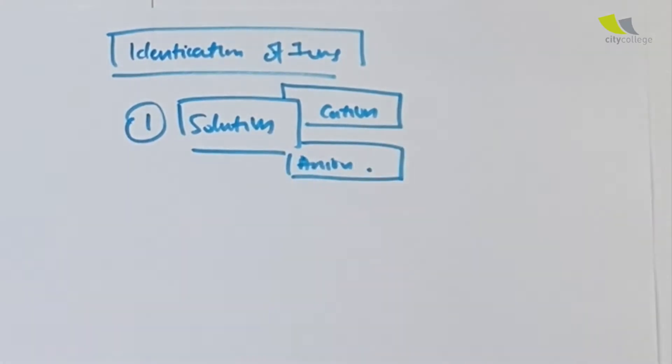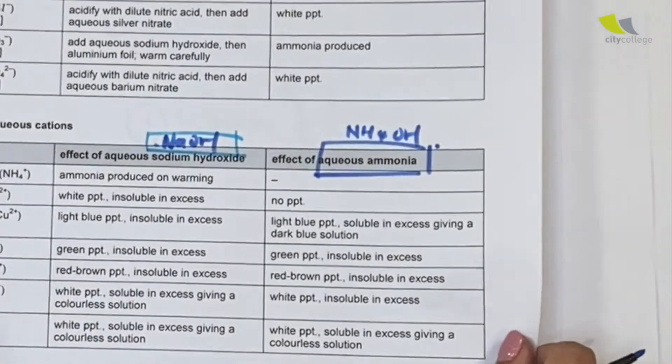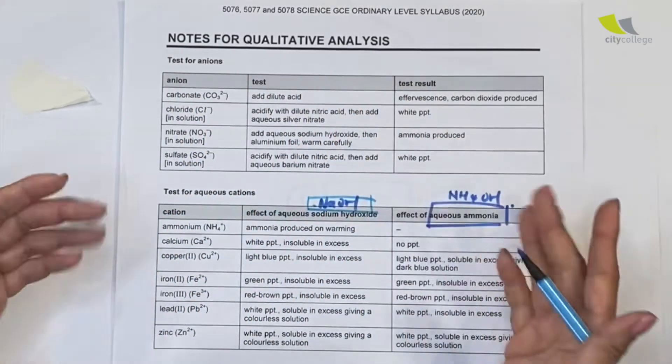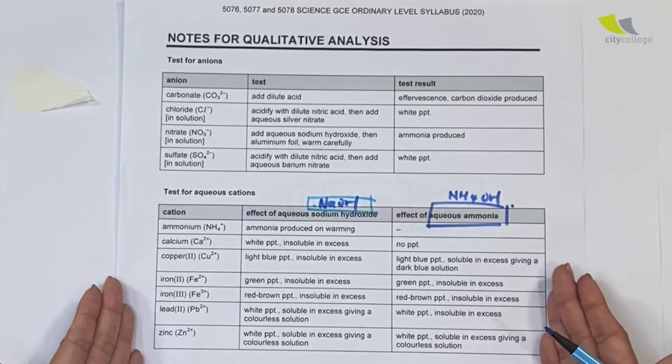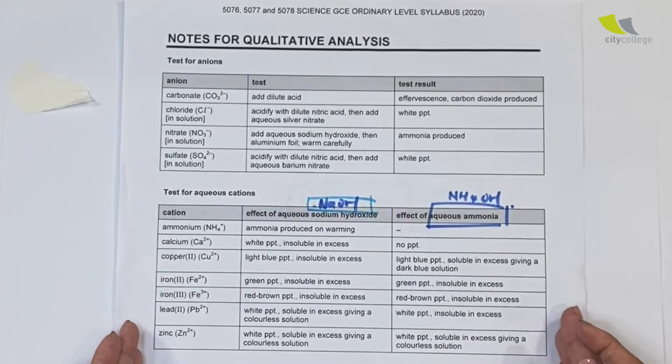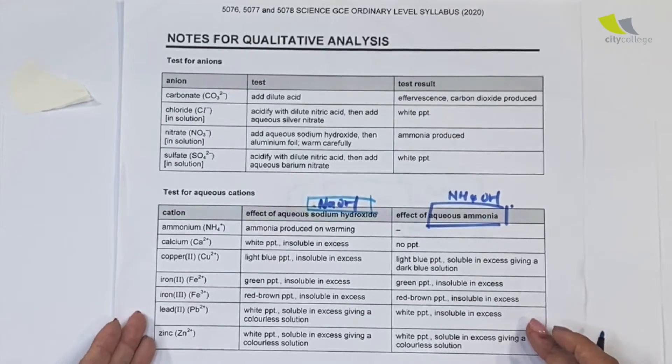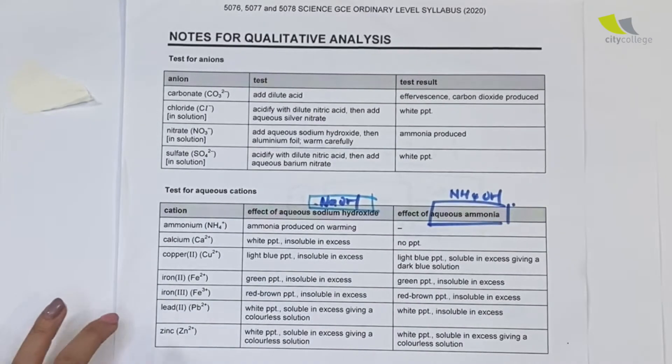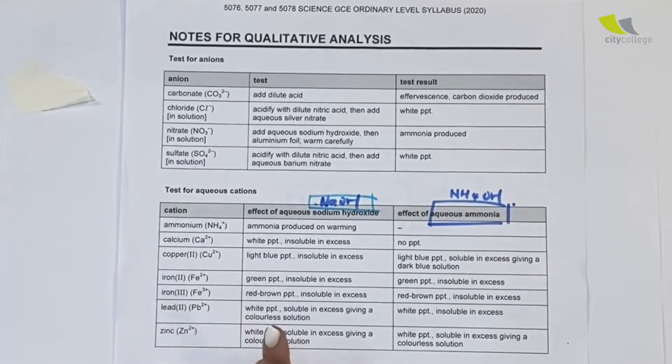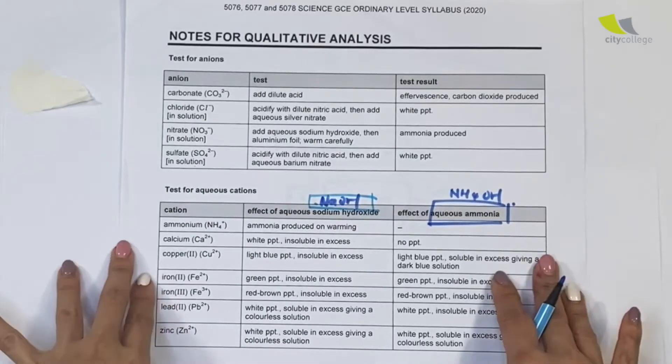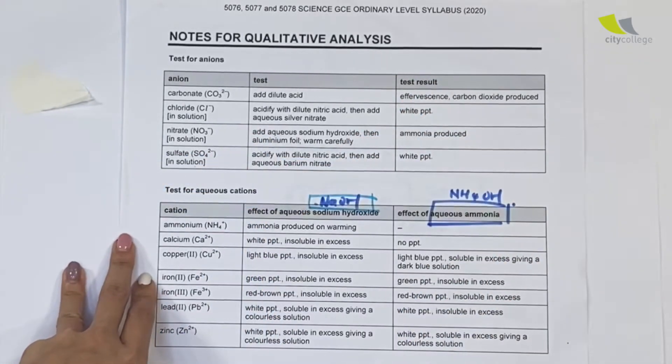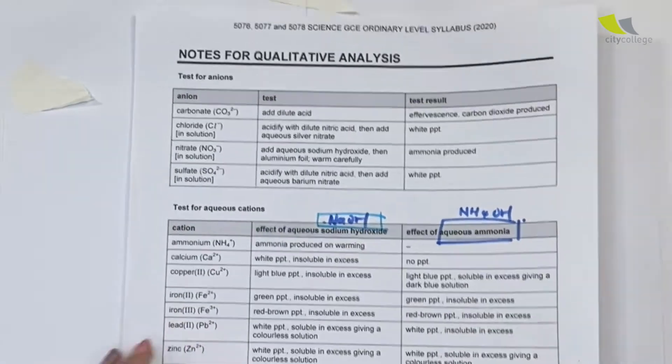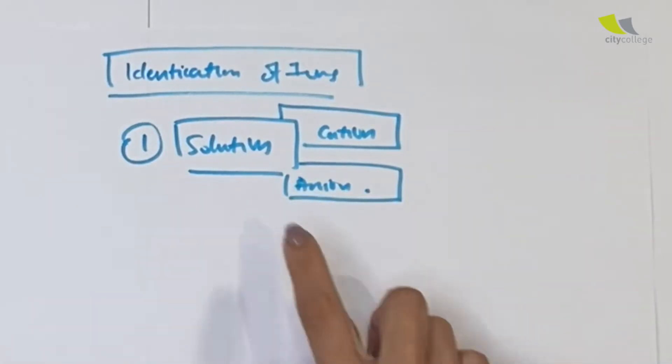My identification of ions will require me to get myself familiar with this paper called the Notes for Qualitative Analysis. This is exactly the same paper that you're given during your practical. During your written paper, this paper is not given and our job is to memorize them. I actually came up with another video to help you better understand and memorize it in a very short time.